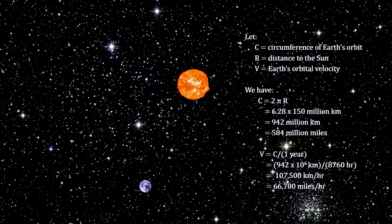Dividing by the number of hours in a year, we get the velocity of the Earth around the Sun: 107,500 kilometers per hour, or 66,700 miles per hour.